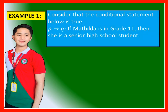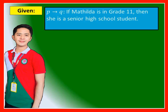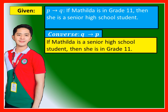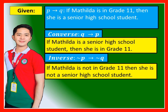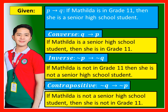Example: Consider the conditional statement — P then Q: 'If Matilda is in grade 11, then she is a senior high school student.' The converse (Q then P): 'If Matilda is a senior high school student, then she is in grade 11.' The inverse (not P then not Q): 'If Matilda is not in grade 11, then she is not a senior high school student.' The contrapositive (not Q then not P): 'If Matilda is not a senior high school student, then she is not in grade 11.'